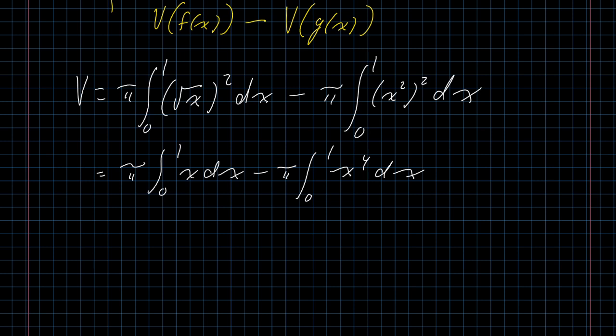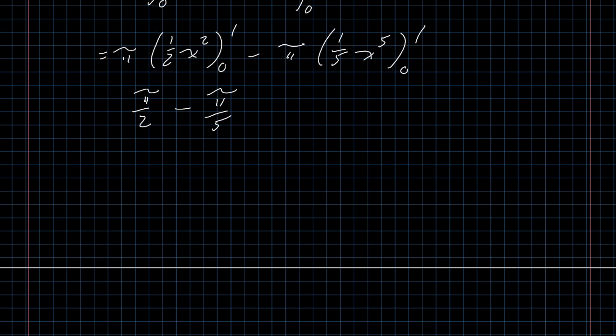The integral of x is one-half x squared. The integral of x to the fourth is one-fifth x to the fifth. Plug in x equals one, plug in x equals zero, you're going to end up with pi over 2 minus pi over 5. We can find some common denominators here. Pi over 2 is 5 pi over 10 and pi over 5 is 2 pi over 10. So when you subtract these, you end up with 3 pi over 10. And that's really it.